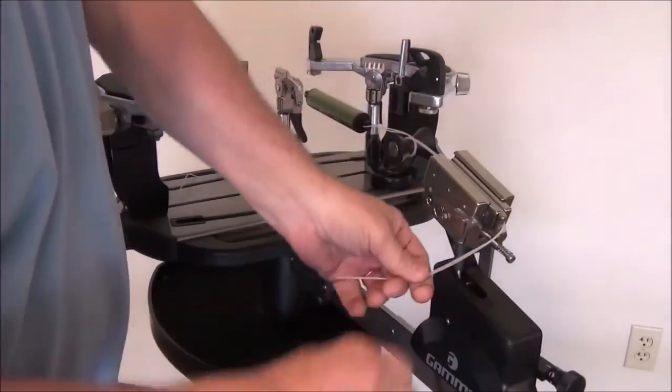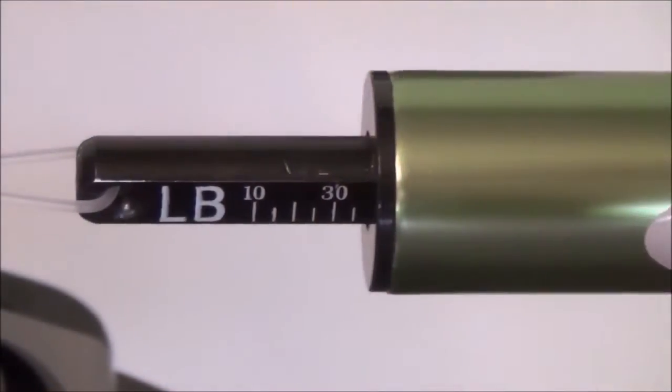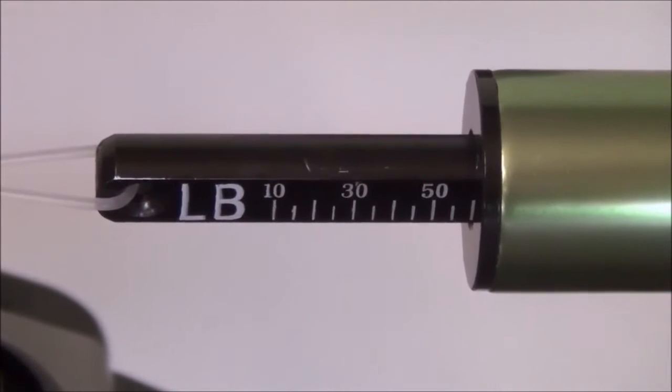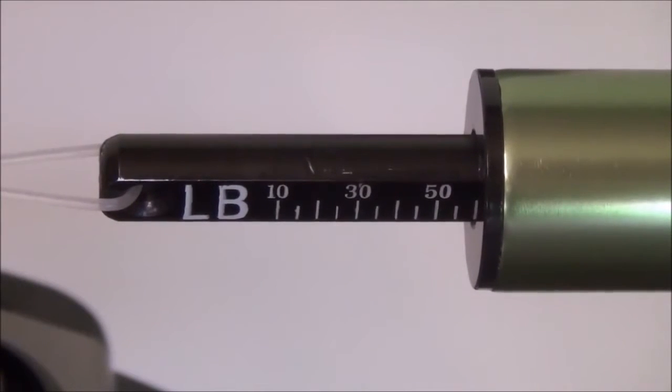Wrap the other end of the string from the calibrator around the roller guide into the linear gripper and pull tension. Read the tension indicated on the calibrator scale and compare the reading to the set tension.